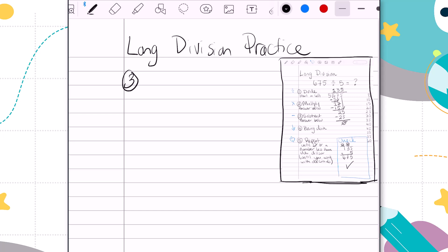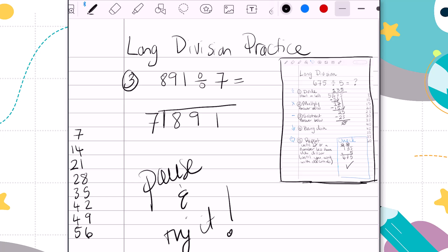All right, here's our problem 3. We are going to do 891 divided by 7. I'm going to write a multiples list on the side. 7, 14, 21, 28, 35, 42, 49, 56. I'd like you to pause the video right now and try this problem please. Thank you for trying it. That's how your brain grows. Let's go ahead and get started.